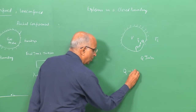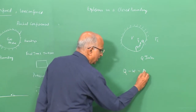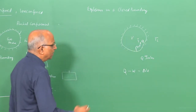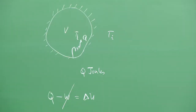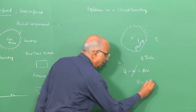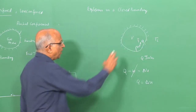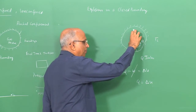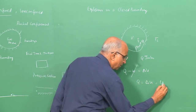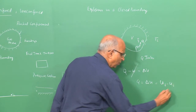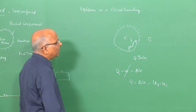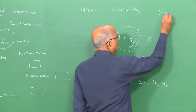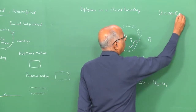Since the boundary is fixed and does not move, the work done W is zero. Therefore Q equals the change in internal energy. That means at maximum pressure, Q equals the final internal energy minus the initial internal energy. Internal energy equals mass times specific heat at constant volume C_V times temperature. So Q equals M × C_V × (T_max - T_initial).